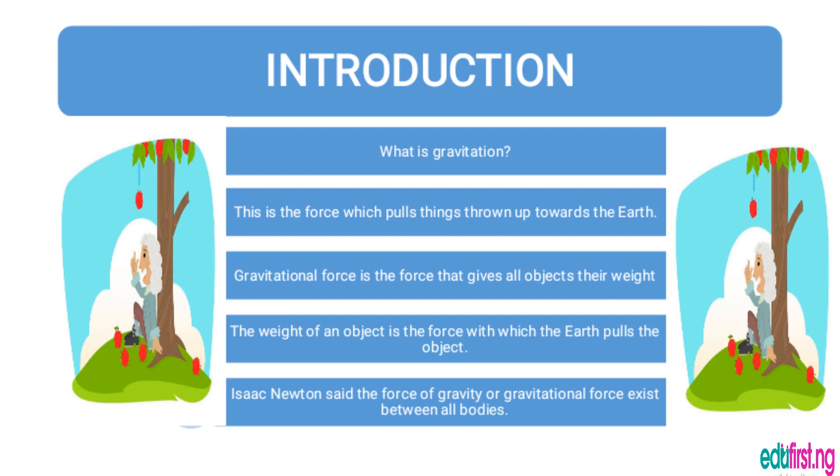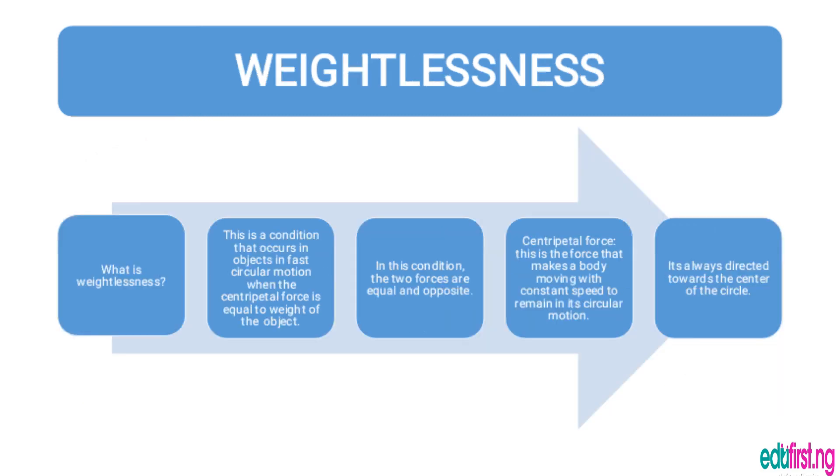What is weightlessness? This is a condition that occurs in objects in fast circular motion when the centrifugal force is equal to the weight of the object. In this condition, the two forces are equal and opposite. Centripetal force is the force that makes a body moving with constant speed remain in its circular motion, and it's always directed toward the center of the circle.